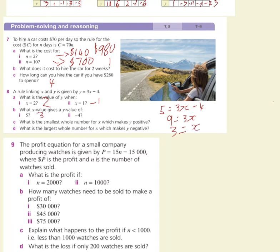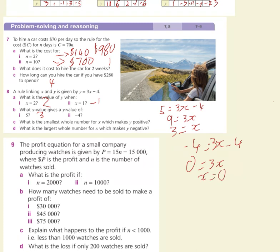To get y equals minus 4, we have minus 4 equals 3x take 4. Because we've got minus 4 on both sides, the answer is just 0. But to show it algebraically: add 4 to both sides to get 0 equals 3x, and the only number that multiplies by 3 to give 0 is 0, so x equals 0.